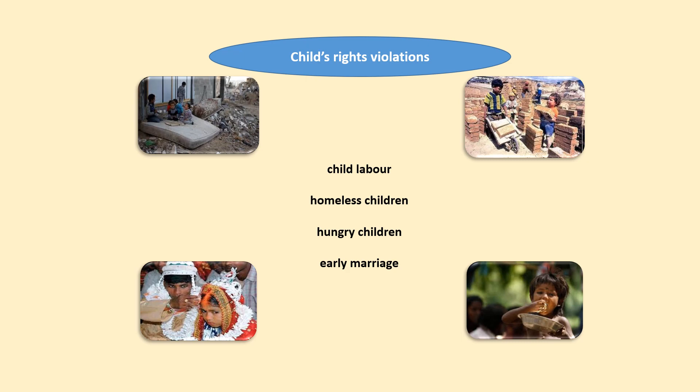Let's go through the answers. Picture one is about homeless children. Picture two — very good — child labor. Picture three: early marriage. And the last one, picture four: hungry children. Very good.